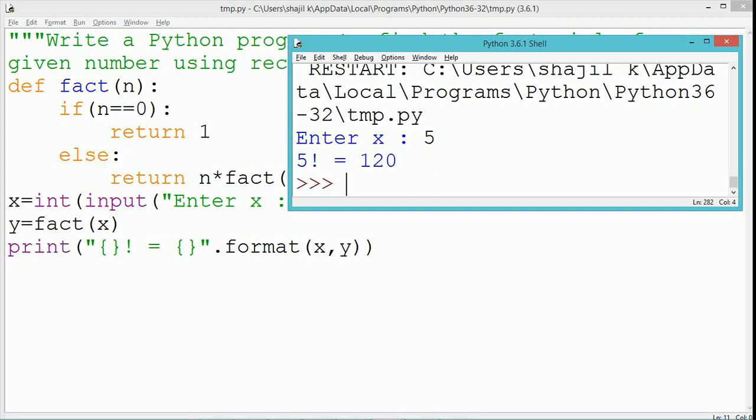So if we pass the value of x as 5, the first placeholder will be replaced by 5 and the second placeholder will be replaced by the value of 5 factorial which is 120. So it gets printed as 5 factorial equal to 120. Run and see the program output of this.